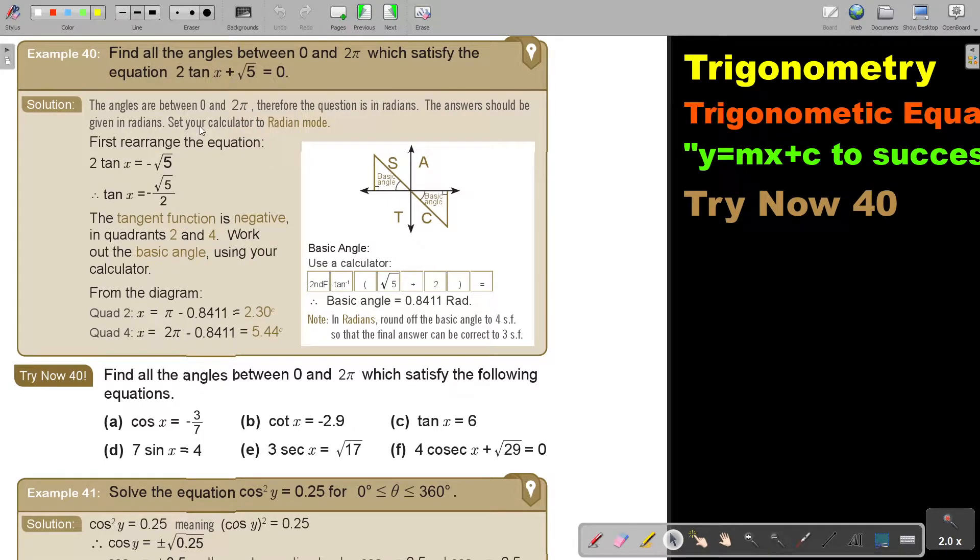Now first we're going to rearrange. This is our equation. Now we're going to get this over, it becomes negative. Divide by 2. There's my ratio. It's negative. Do you see it's negative? The tangent function is negative in quadrants 2 and 4. Because think of your cos, there it's positive and there it's negative.